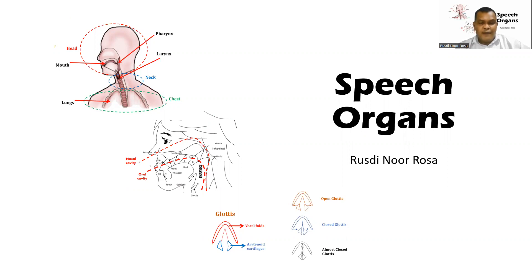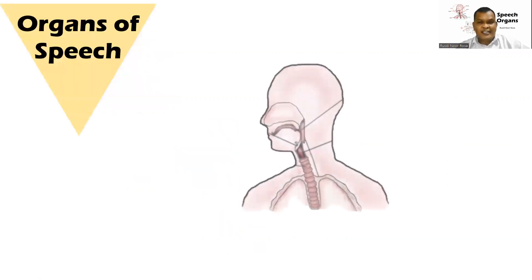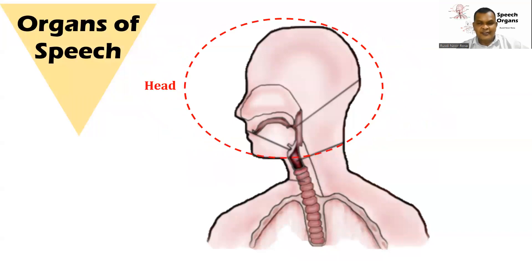There are three parts of our body in which our speech organs are located. The first one is our head. There are many organs of speech located in our head.